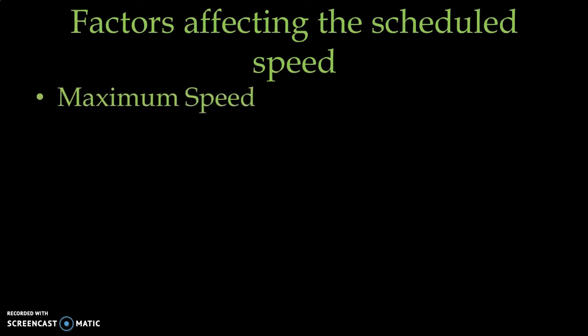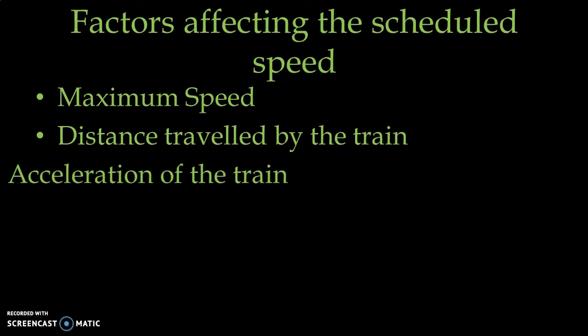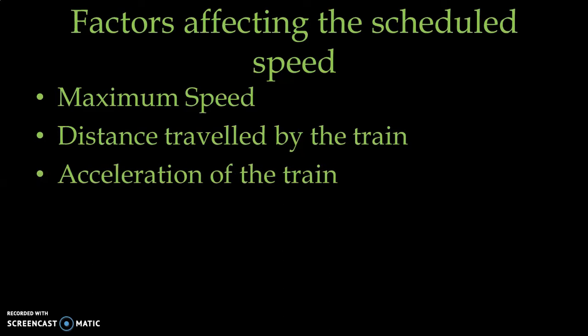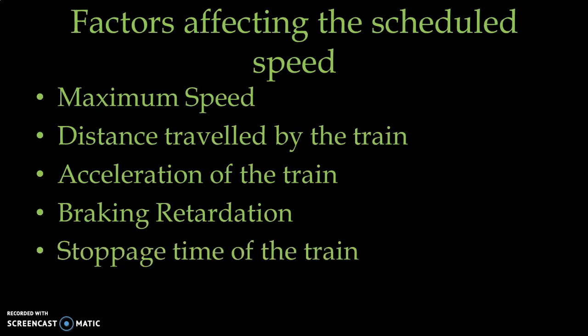Now let us discuss certain factors which affect the scheduled speed. The first is maximum speed, second is distance travelled by the train, third is acceleration of the train, fourth is retardation of the train, and the last one is stoppage time of the train. Our purpose is to increase the scheduled speed, and we have to discuss or modify certain parameters to improve it. Let us discuss all the factors one by one.